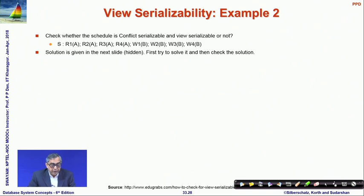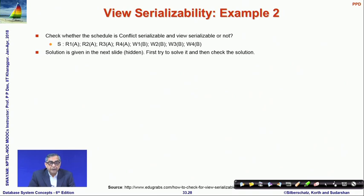There is another example with four transactions R1, R2, R3, R4 and two data items A and B where you must establish whether the schedule is view serializable or not. This example is worked out in the presentation slides. You should first try it yourself, and if you are unable to solve it, then check the solution from the slides.